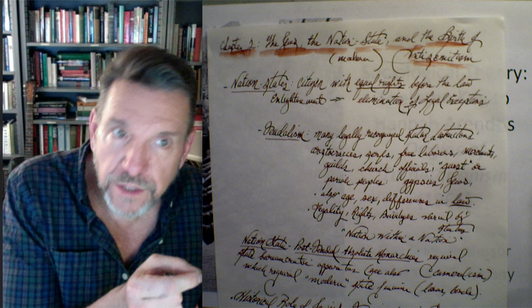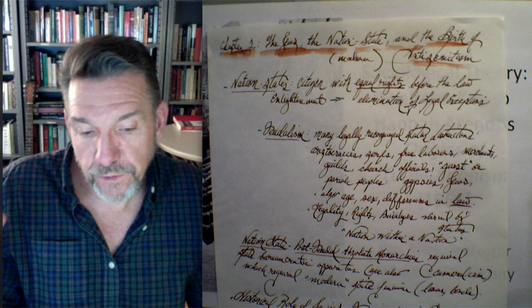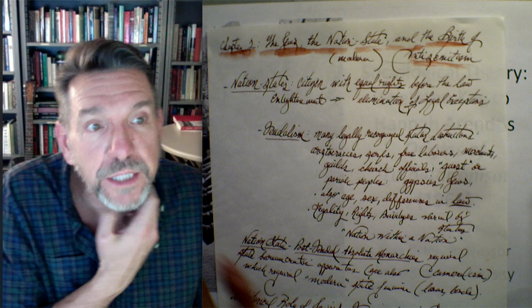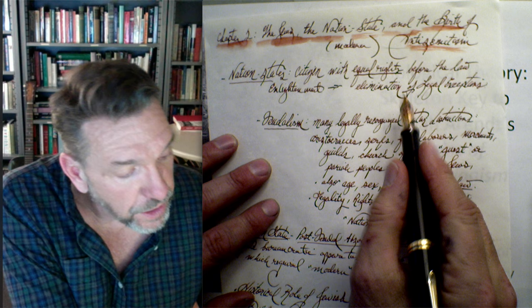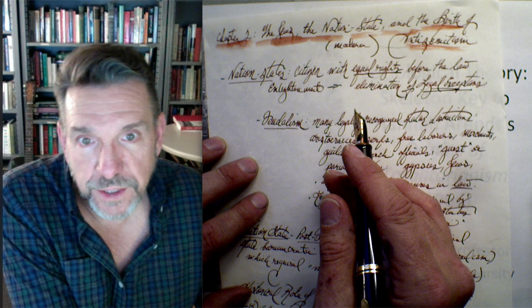Chapter two: 'The Jews, the Nation State, and the Birth of Antisemitism.' She argues that nation states are composed of citizens who have equal rights before the law — the post-Enlightenment notion of the social contract and egalitarian subjects. You eliminate legal exceptions and become a nation of laws. Feudalism, by contrast, had many legally recognized statuses and distinctions: aristocrats, serfs, free laborers, merchants, guild members, church officials, guest or pariah peoples like Romani and Jews, with age and sex differences also written into law.